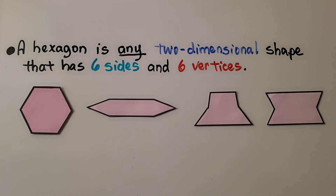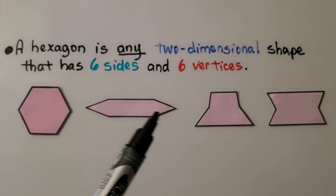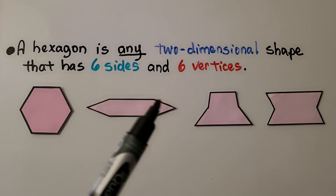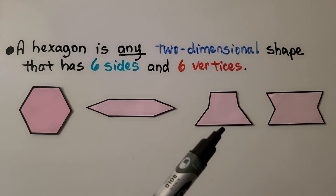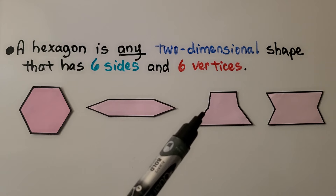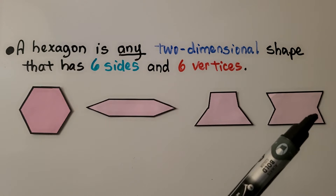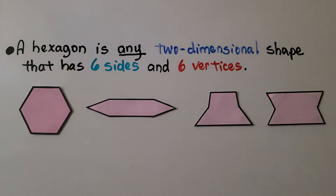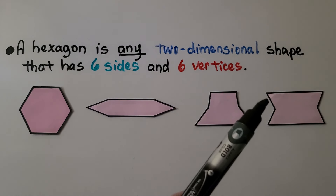A hexagon is any two-dimensional shape that has six sides and six vertices. You might be used to seeing it look like a regular hexagon, but other shapes are also hexagons — one, two, three, four, five, six sides and six vertices. Even irregular-looking ones with six sides and six vertices are hexagons.